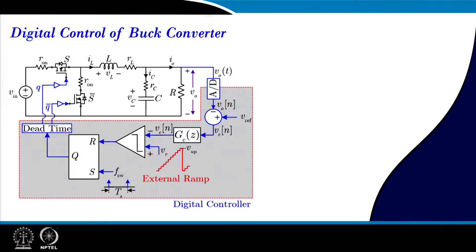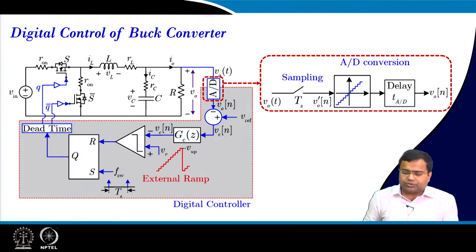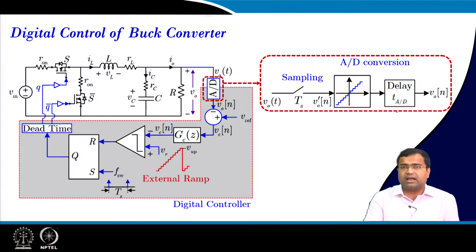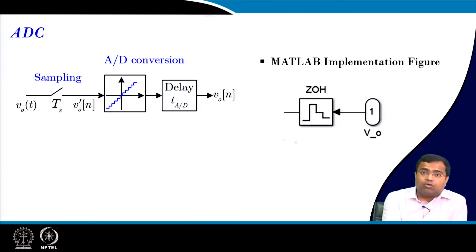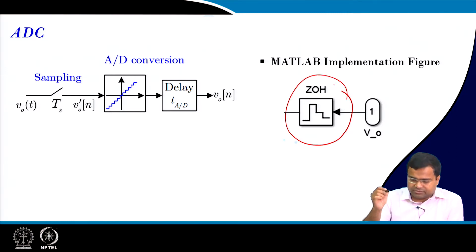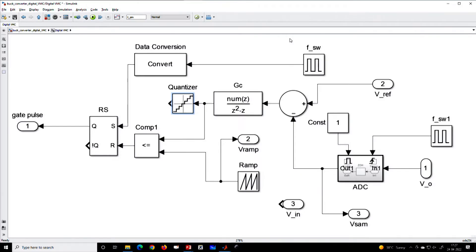Let us start with the digital control of a buck converter using voltage mode control. The A to D converter requires a sampler, then a quantizer and delay. To implement this block, we use a sample and hold — in MATLAB you can easily get a zero order hold circuit. Let us go to MATLAB and see.